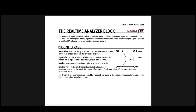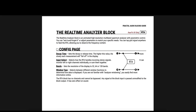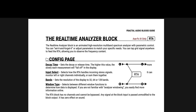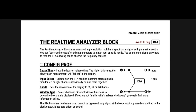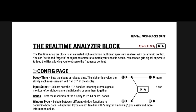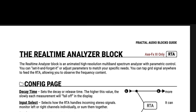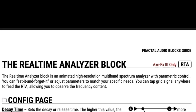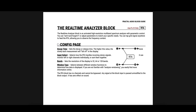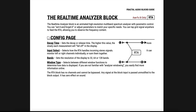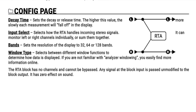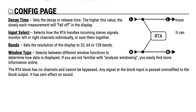According to the Fractal Audio Blocks Guide, the real-time analyzer block is an animated high-resolution multiband spectrum analyzer with parametric control. You can set it and forget it, or you can adjust parameters to match your specific needs. You can tap the grid signal anywhere to feed the real-time analyzer, allowing you to observe the frequency content. On the config page, there are four different parameters you can set. Decay Time sets the decay or release time. The higher this value, the slower each measurement will fall off in the display.